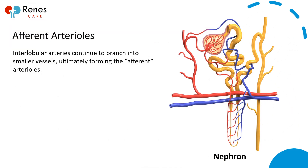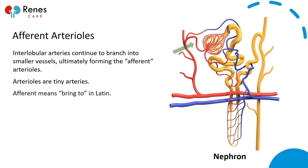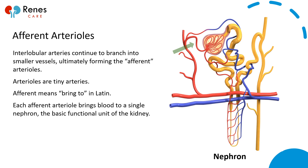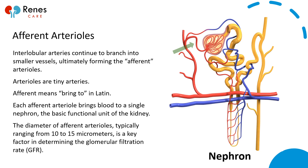Interlobular arteries continue to branch into smaller vessels, ultimately forming the afferent arterioles. Arterioles are tiny arteries, and afferent means 'bring to' in Latin. Each afferent arteriole brings blood to a single nephron, the basic functional unit of the kidney. The diameter of afferent arterioles, typically ranging from 10 to 15 micrometers, is a key factor in determining the glomerular filtration rate, or GFR.